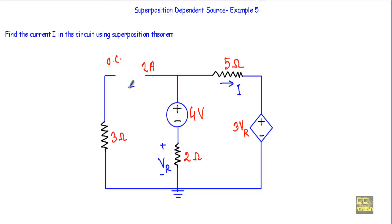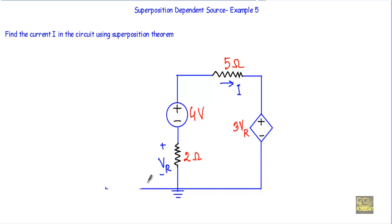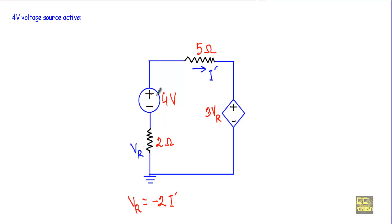Replacing the current source with an open circuit means I can remove it from the circuit. That entire branch will act like an open circuit, so I can remove it from the original network. The rest of the circuit will be a series circuit with the 4 volt source active as the only independent source. Since this is the positive terminal and this is the negative terminal, the current will flow clockwise. The 4 volt, 5 ohm, 3Vr, and 2 ohm resistors are all connected in series, so the current throughout is the same — let's call it I prime.